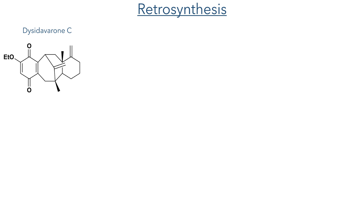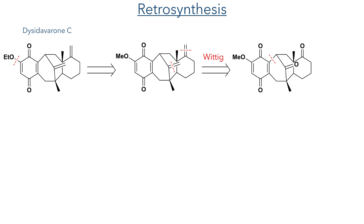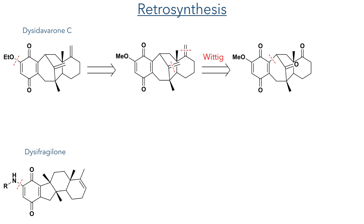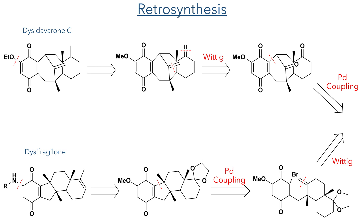So let's look at the retrosynthesis. Dissi-Darveron C can first be disconnected at the ethoxyenol ether, leading back to a methoxy ether. The two exoalkenes present could be installed using Wittig chemistry. For the Dissi-Fragalons, the first disconnection can also occur at this alpha position, here disconnecting the amine groups, again leading back to an alpha-methoxyenol ether. Disconnecting the carbon-carbon bond of the five-membered ring leads back to an alpha-brominated quinone and a six-membered ring bearing an exoalkene. These intermediates — the Dissi-Fragalons and Dissi-Darveron C — can both be disconnected back to a common intermediate, using either Wittig chemistry or a palladium-catalyzed coupling.